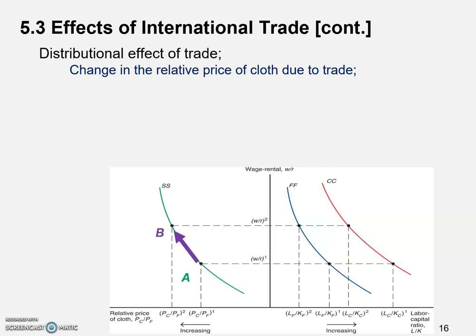On the left-hand side of this graph, the home economy is moving from A to B along this curve. In other words, we're going to see a higher relative price of cloth in home. And because of that, the cloth industry in home would expand — they're going to produce more cloth and export them to foreign to make a higher profit.